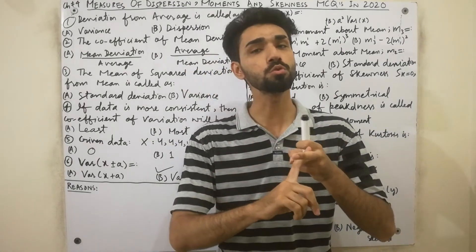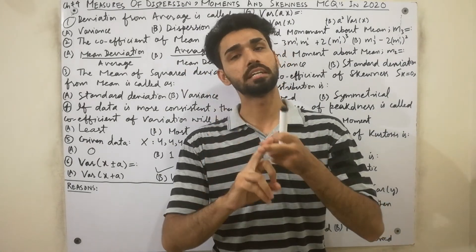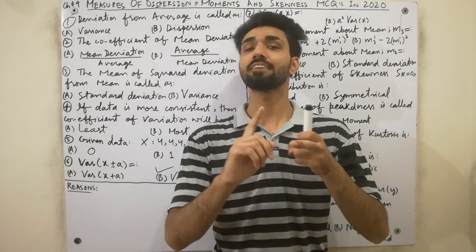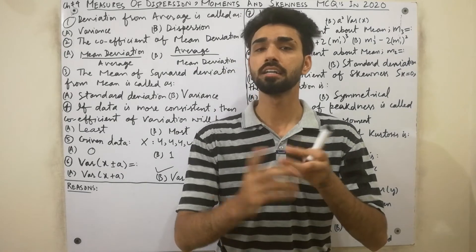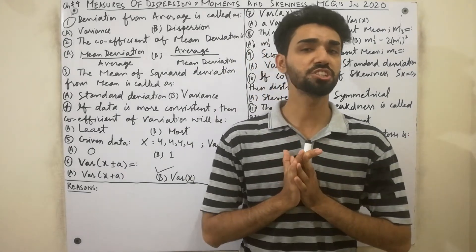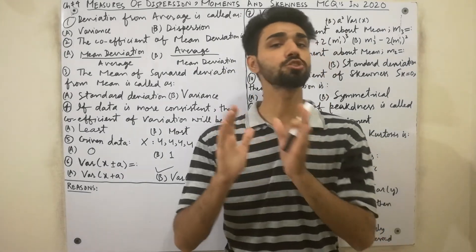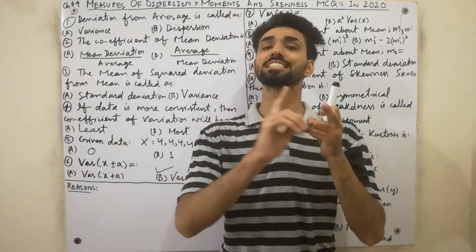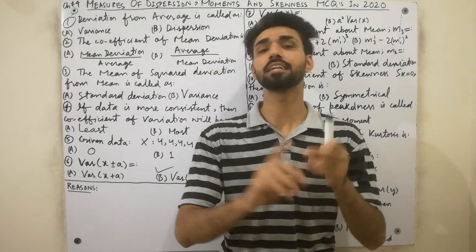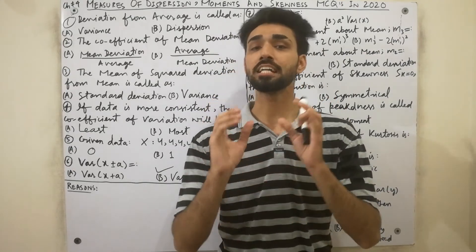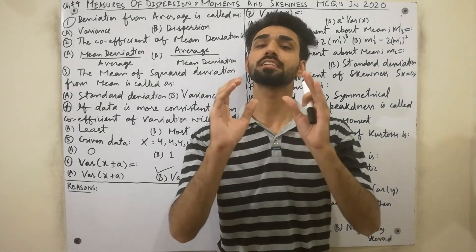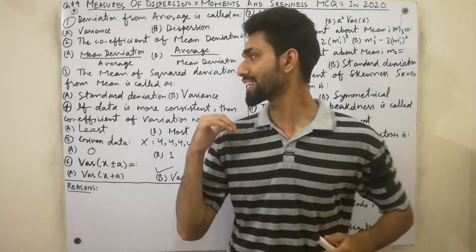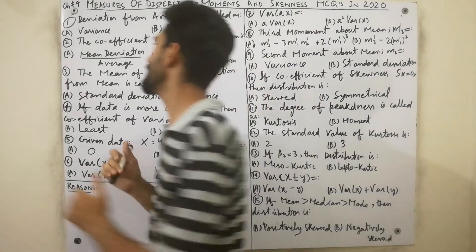If you want more practice, Chapter Number Two covers Presentation of Data MCQs, Chapter Number Three covers Averages and Measures of Central Tendency MCQs, and Chapter Number One covers Introduction to Statistics. Check the description below for those lectures. Let's start the lecture.